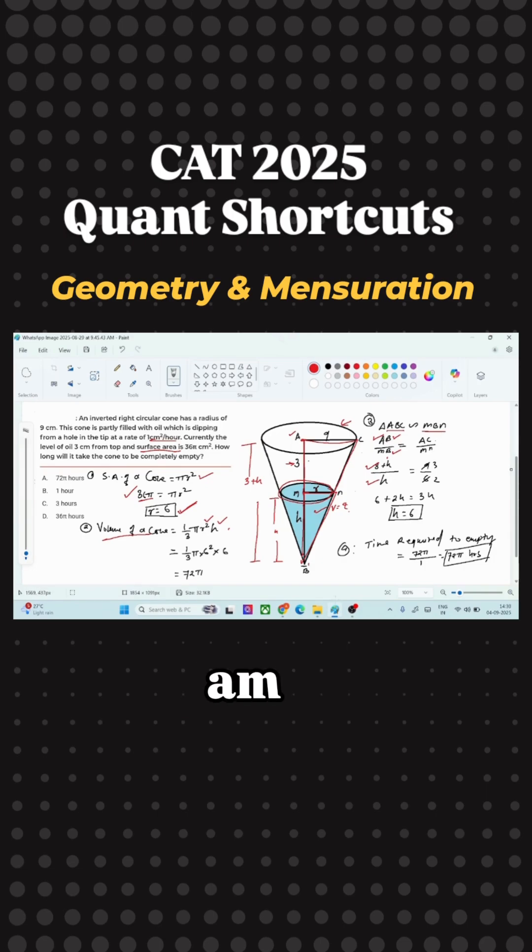And another ratio that I am taking is AC by MN, those sides for which I know the values. So AC, which is the radius of the bigger cone, and r is the radius of smaller cone, which we have already in the question. 9 by 6, which is after simplified, you will be getting 3 by 2. And from this, I can get the value of H.